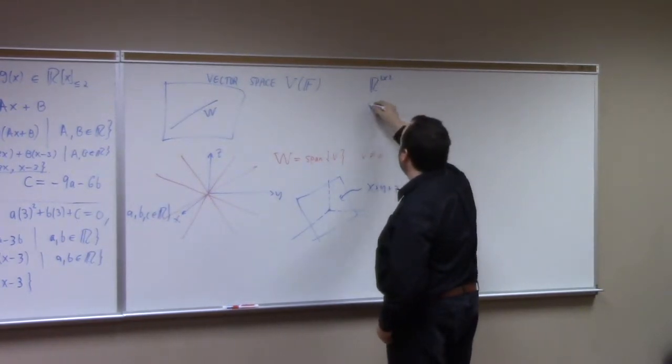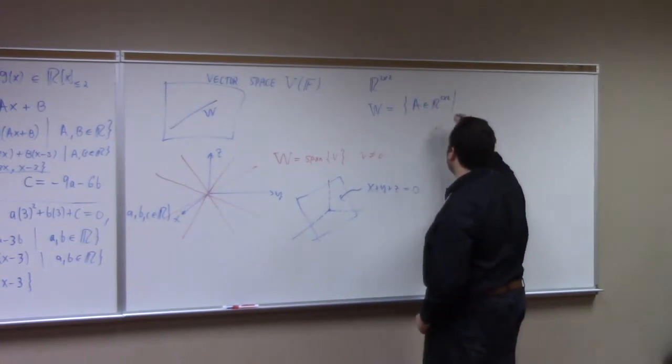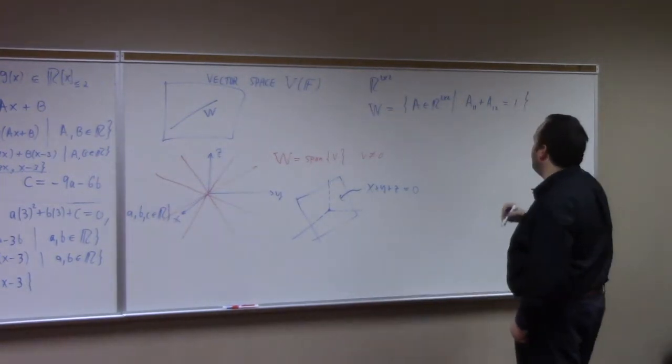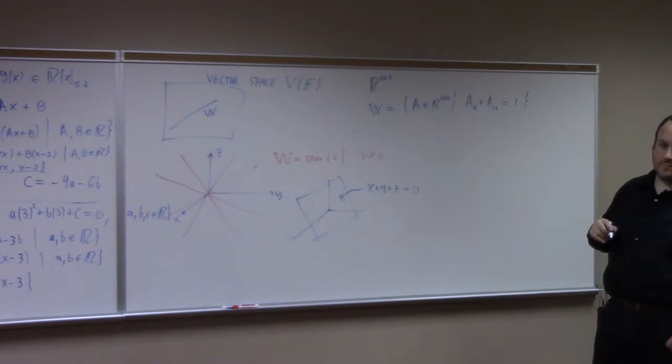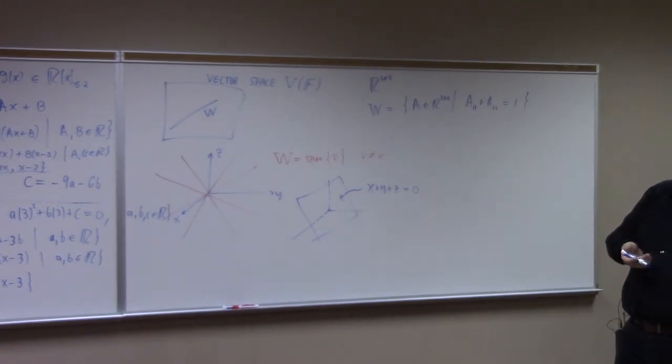If we look at w equal to, you know, A in R2 by 2, such that, you know, A1,1 plus A1,2 is equal to 1.